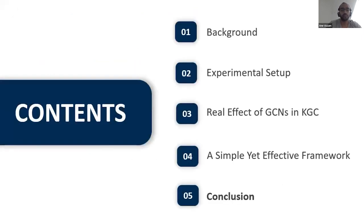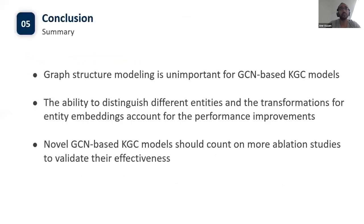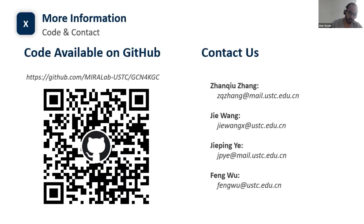In conclusion, we conduct extensive experiments to find the real critical part behind the complicated architectures of GCN-based KGC models. Surprisingly, graph structure modeling is unimportant for GCN-based KGC models. Instead, the ability to distinguish different entities and the transformations for entity embeddings account for the performance improvements. We suggest that novel GCN-based KGC models should rely on more ablation studies to validate their effectiveness. Our code is publicly available on GitHub. If you have any questions about our work, please do not hesitate to contact us. Thanks for listening.